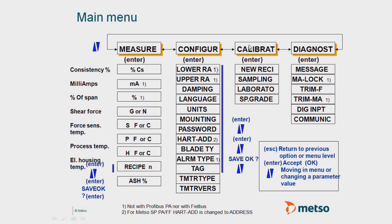Next, we're going to jump into calibration. And here, we're going to focus just in the new recipe section. So we're going to go ahead and now look at a hands-on configuration and calibration of the SmartPulp.